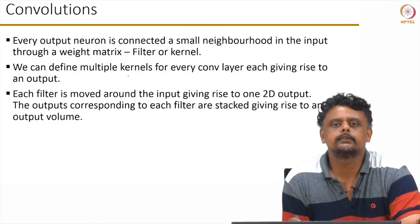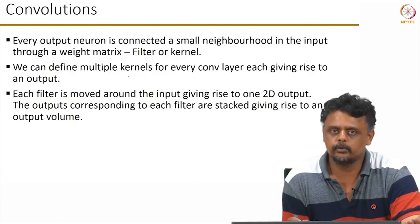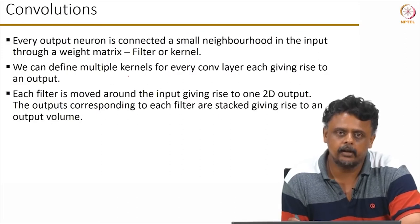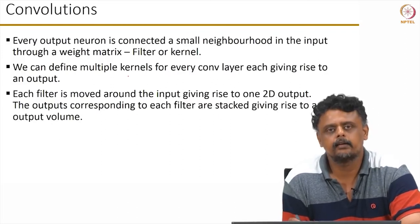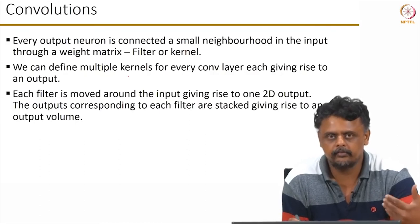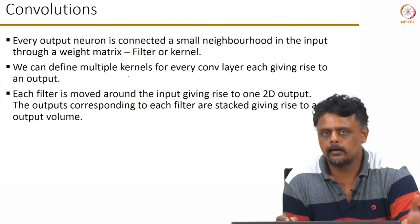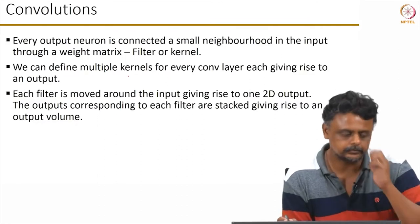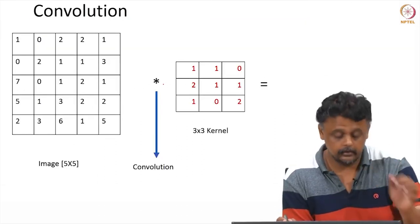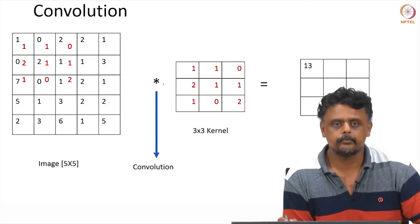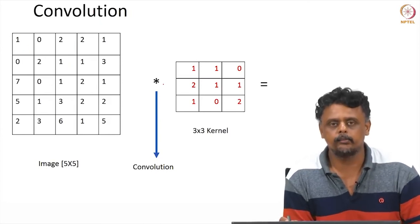This sum of products gives rise to a corresponding output. Since we can define multiple filters in every layer, we can stack the outputs from each filter applied to the input, giving rise to another volume of hidden neurons. Let us look at how a typical convolution works.